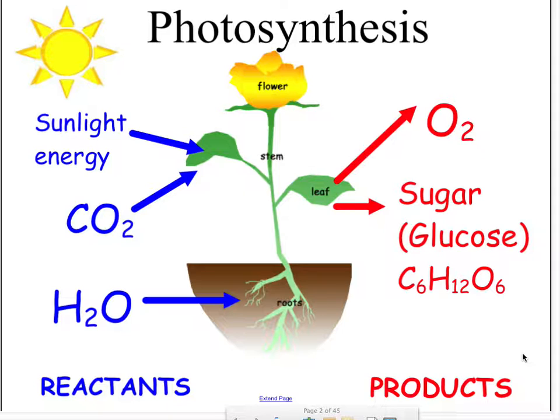Today we are beginning notes on photosynthesis. What you're looking at is a pictorial representation of what photosynthesis is. As you can see, everything on the left that is in blue are all called reactants, and photosynthesis is merely sunlight energy, carbon dioxide, and water entering the plant in order to create sugar.